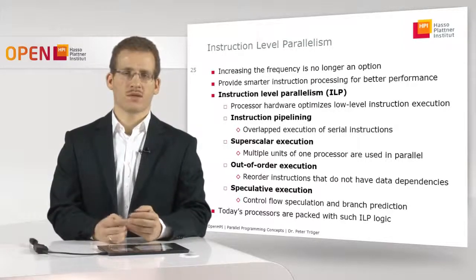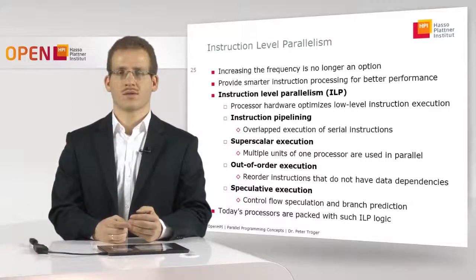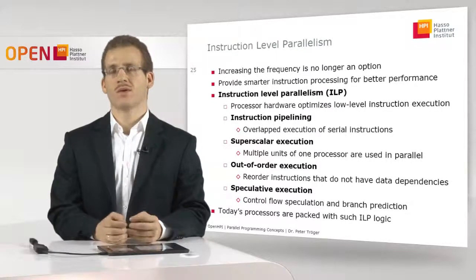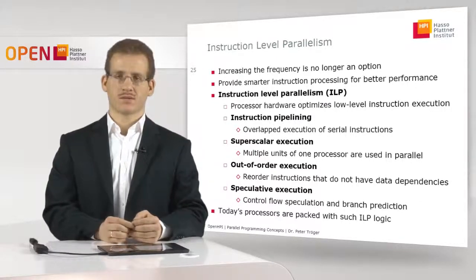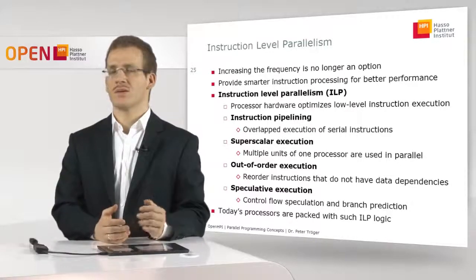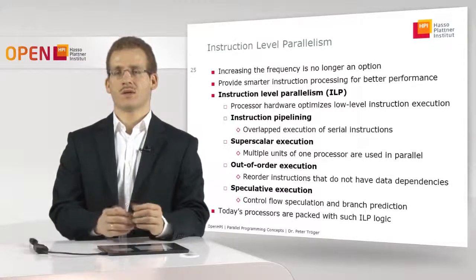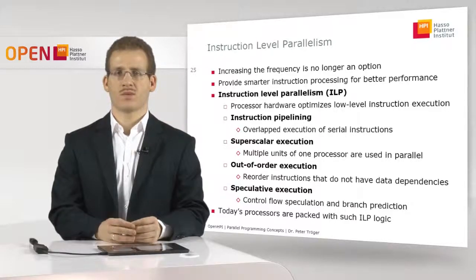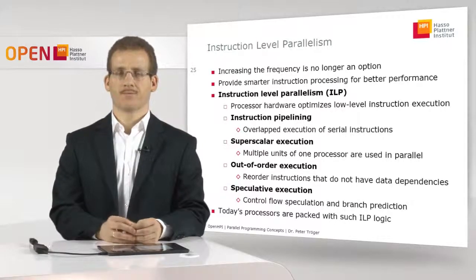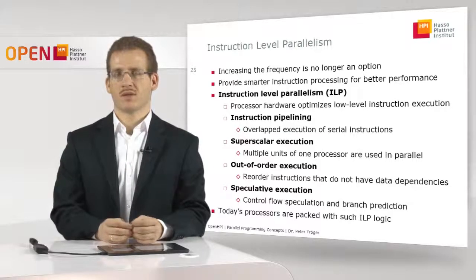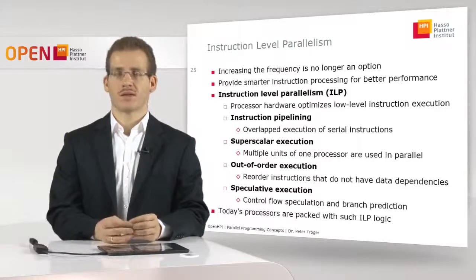A first example for such an instruction level parallelism approach is the so-called instruction pipelining, where we have an overlapping execution of serial instructions. You have an incoming serial instruction stream which is internally parallelized by the processor hardware due to knowledge about the nature of the instructions and how they deal with data.